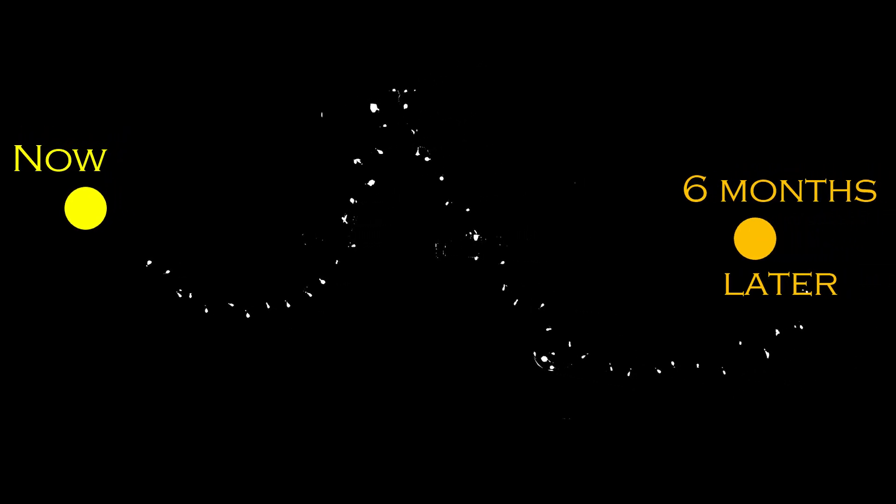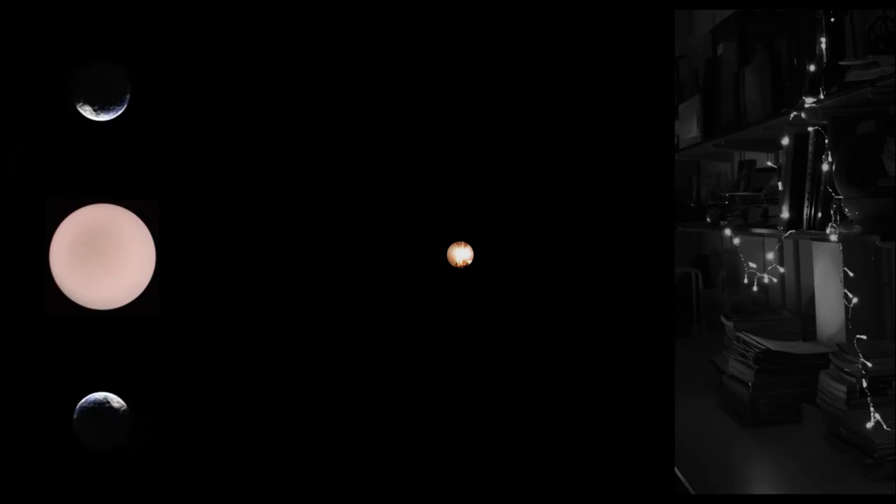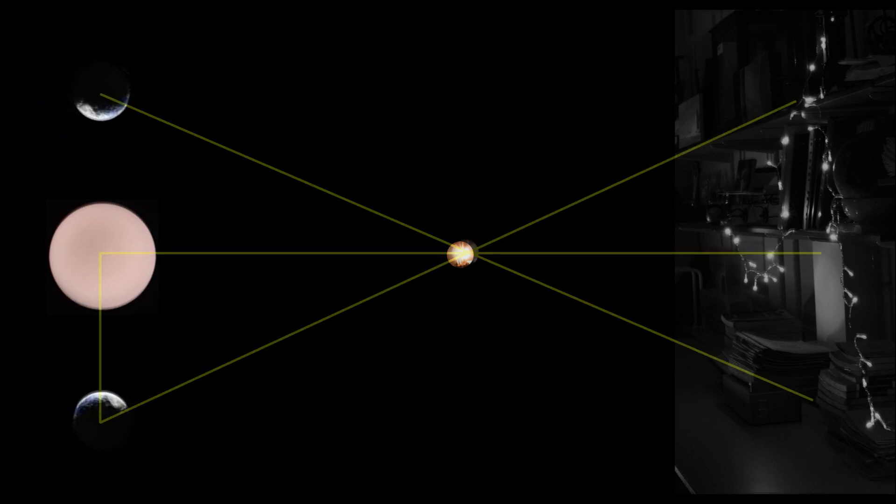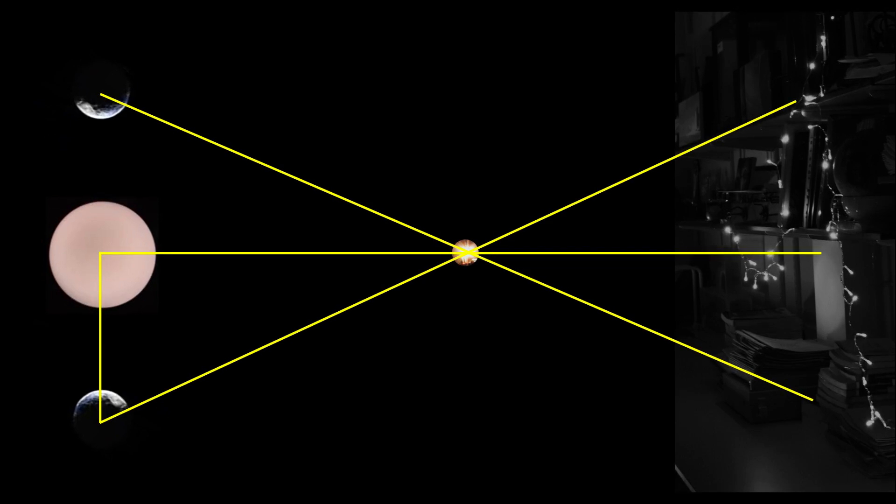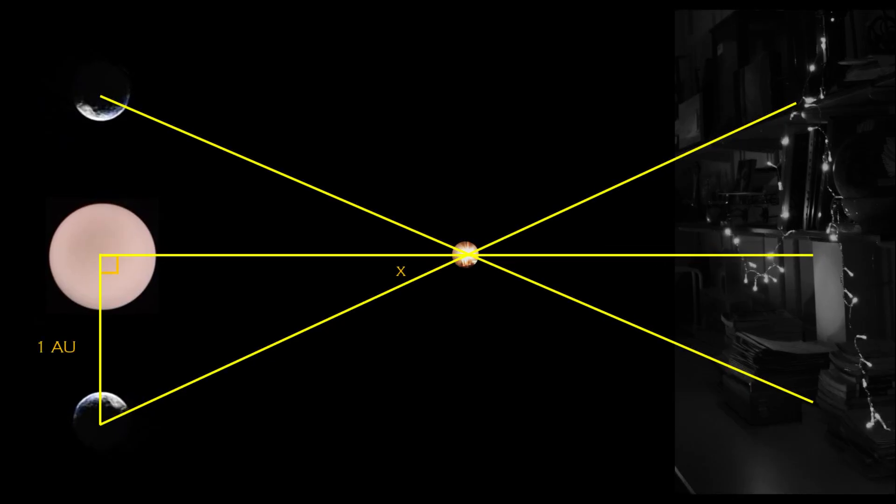We cannot measure the physical distances involved, but we can work out the angle of the sky that the star moves across. From a side view, we can understand this more clearly. We can form a right-angled triangle, consisting of the distance from the Sun to the Earth's position now, the distance from the Sun to the star, and the distance from the Earth to the star.